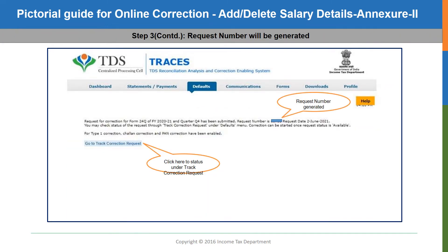Once you submit the request, this page will be displayed where you will get the request number, as you can see on the screen. You may note the same for future reference. You can also check the status of your correction statement by clicking the track correction request button in the drop-down provided in the defaults tab. Alternatively, there is another button on this page — go to track correction request — you can click on that to proceed further.